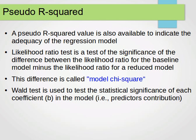Now we're going to learn how to assess or judge or indicate the adequacy of a regression model. Usually the pseudo R-squared is used. The value of the pseudo R-squared is used to indicate the adequacy of the regression model.